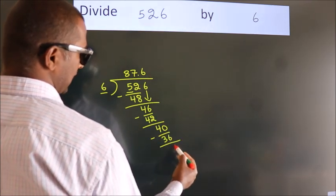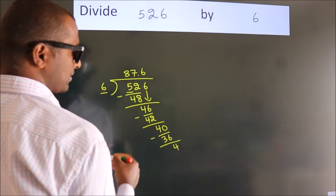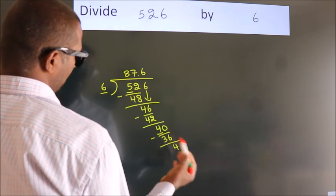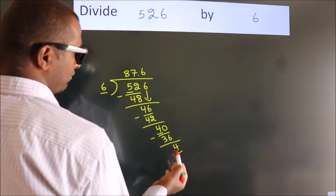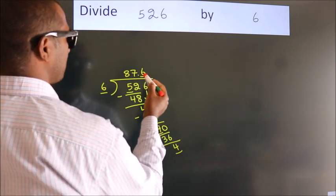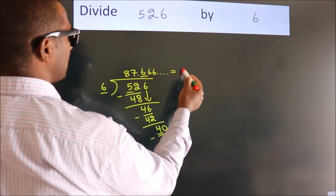Now we subtract, we get 4. Now you observe we had 4 here and we got 4 again. That means this number keeps on repeating. So this is our quotient.